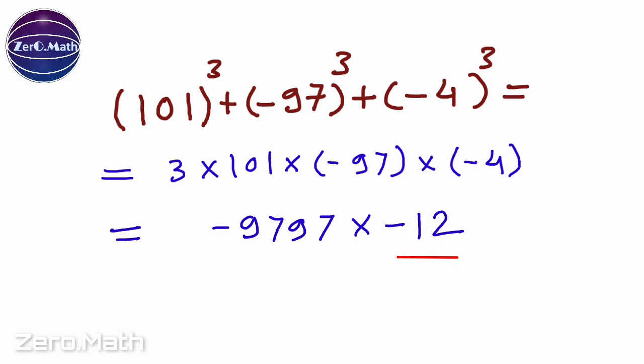Now let's multiply 4 times 3. 4 times 3 is 12. Since 4 is negative, I will write it as minus 12. Now if you multiply minus 9797 into minus 12, you are going to get the result as 117564.